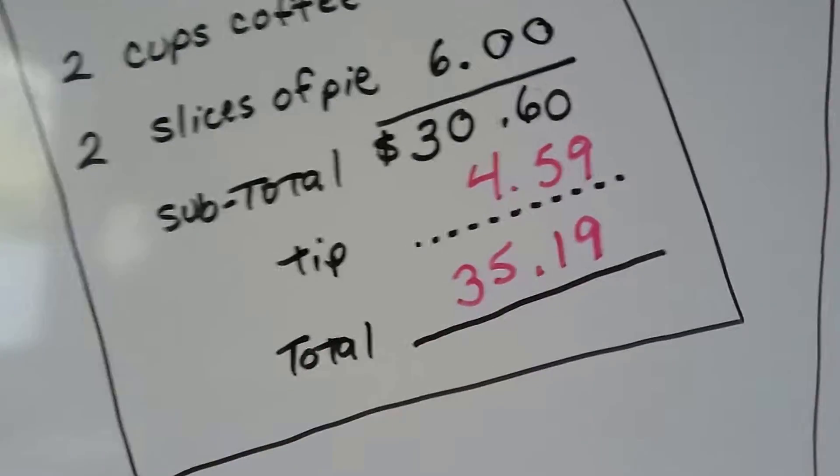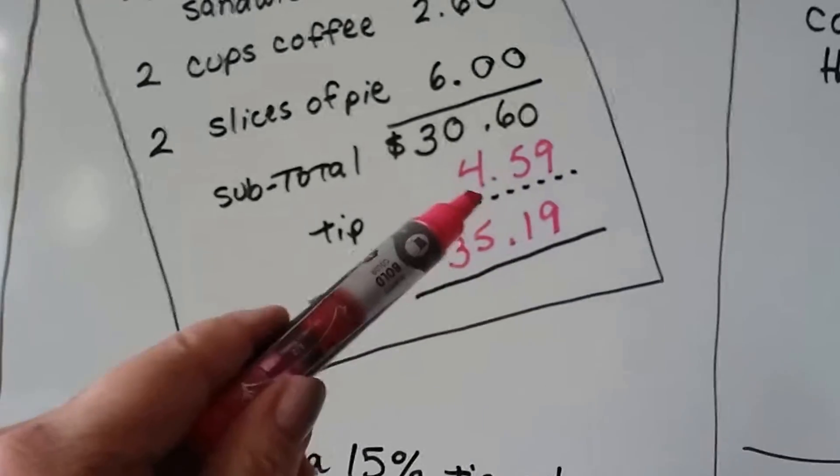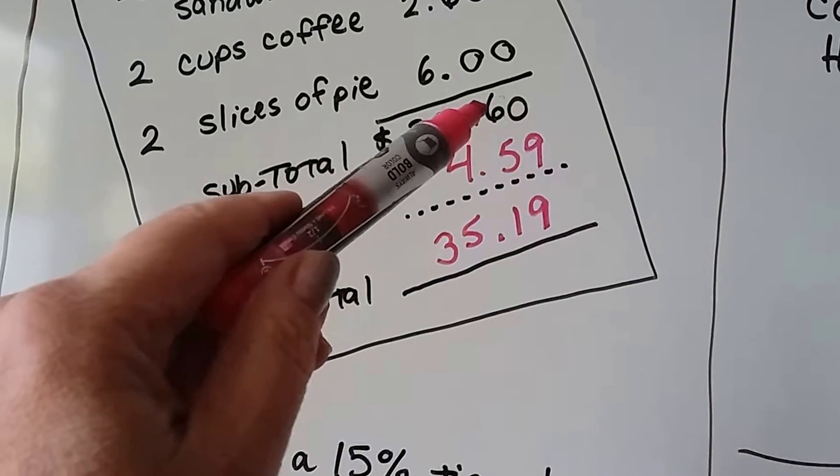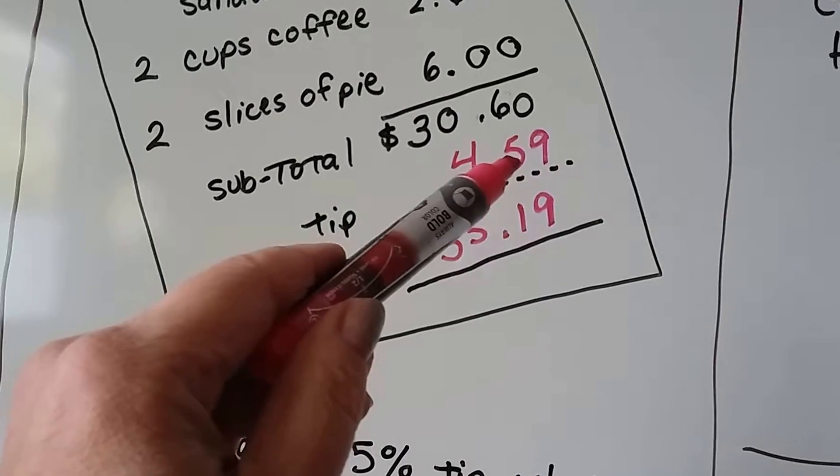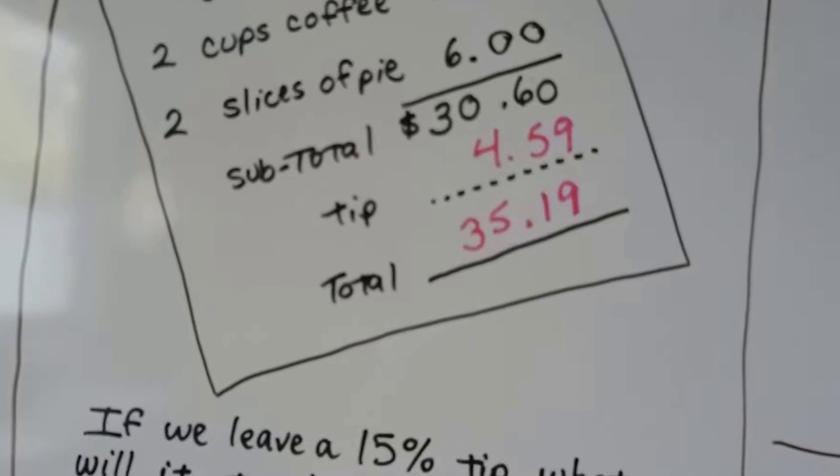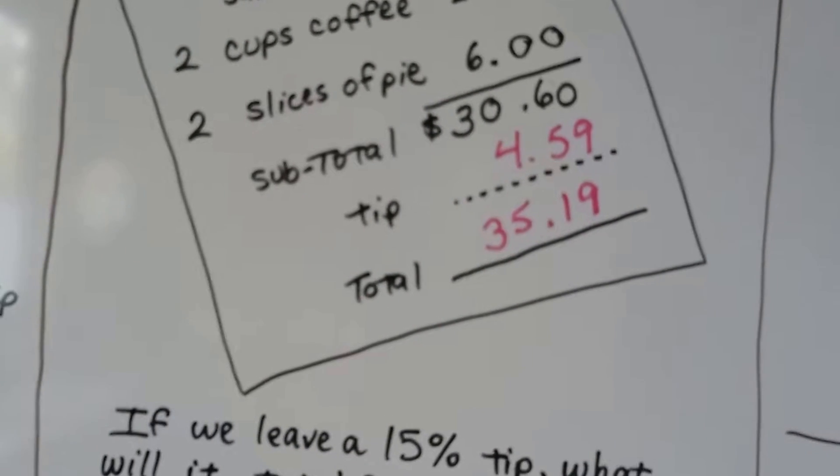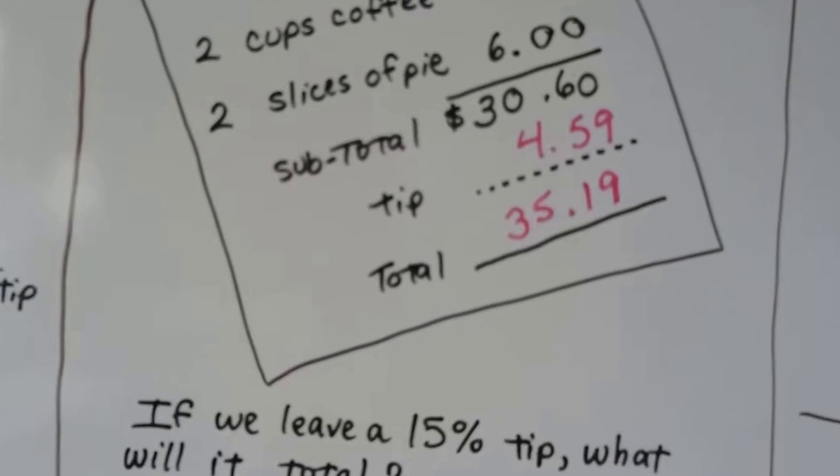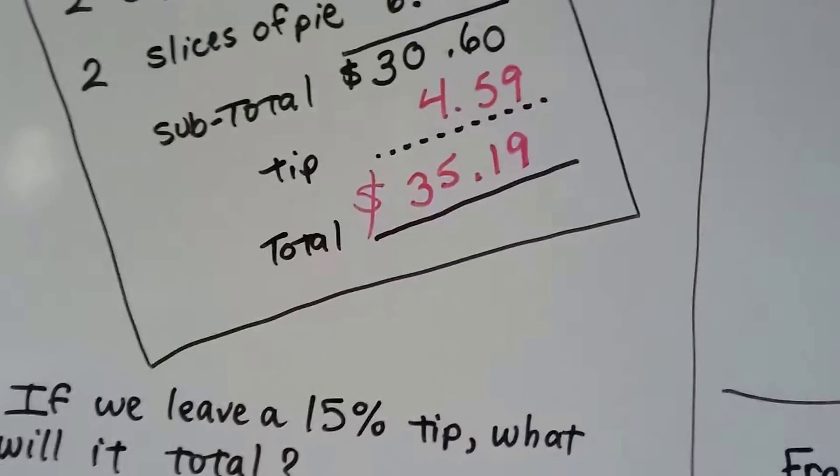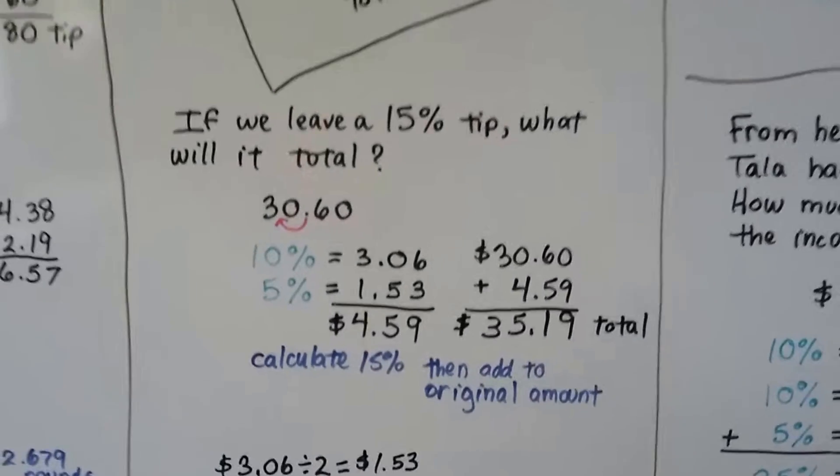Most people would round this. They would round it so that it would come out to even amounts. So if that's $0.60, they would make that $0.40, or they might just give a tip of $5 to be generous. But if you want to be exact with fifteen percent, the total would be $35.19.